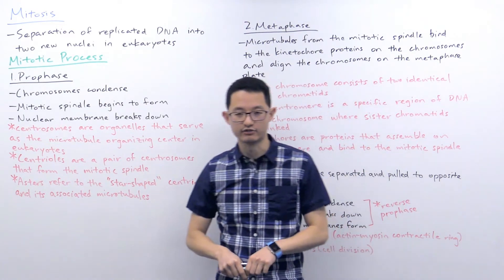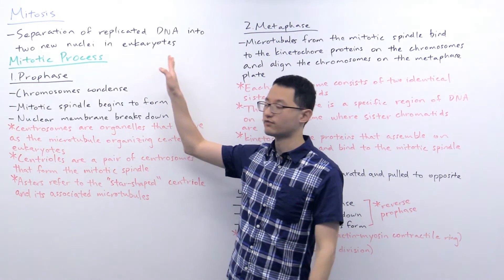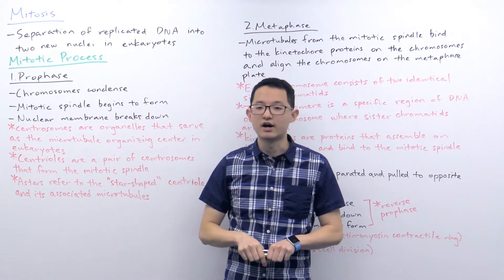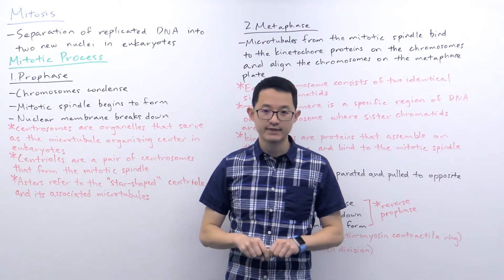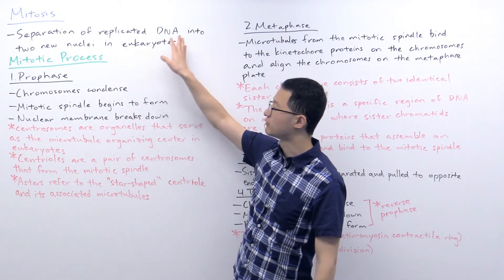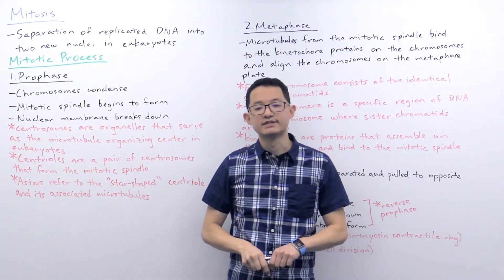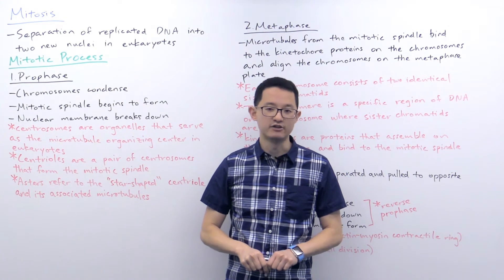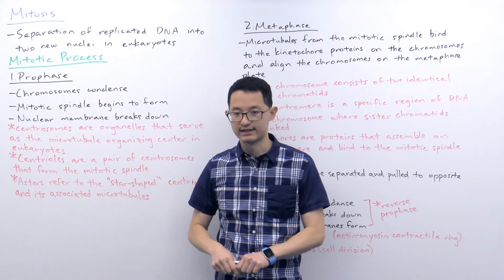A couple important things to know: Number one, this is for eukaryotes, not prokaryotes. Prokaryotes do not do mitosis; instead they perform binary fission. Second, mitosis is referring to the process of separating replicated DNA into two new nuclei. This is not the same as cytokinesis, which is cell division. Mitosis is followed by cytokinesis, though.